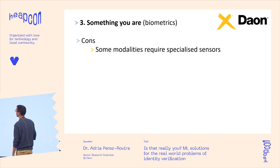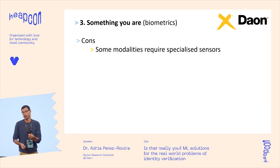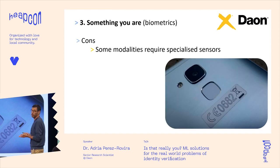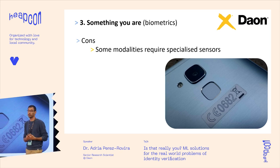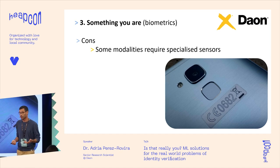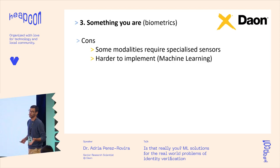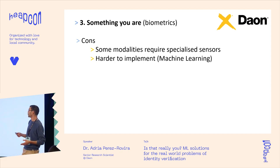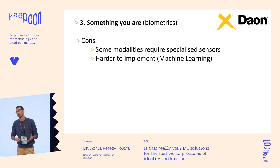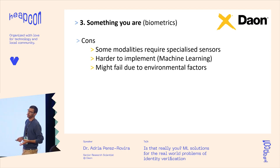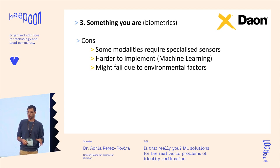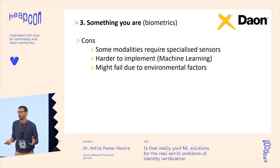So, the cons of biometrics: some modalities require specialized sensors. If you want to prove identity through fingerprints, you need a sensor that reads that. This can be bad — extra hardware — or it can be a differentiator, like Samsung adding an iris scanner in 2017. It's much harder to implement; you'll usually end up using machine learning or at least much more sophisticated techniques than comparing strings. It might also fail due to environment — not the user's fault.